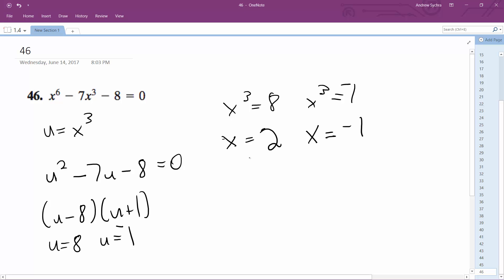This is 2. 2 raised to the 6 is 64, minus 56, minus 8, which is 0. So yes, these both work. Solutions for x are negative 1 and 2, and that's it.